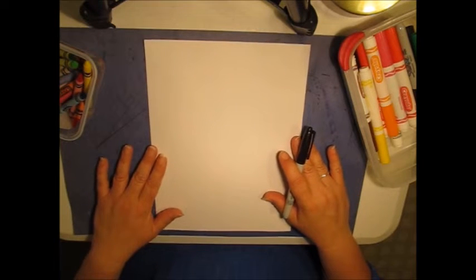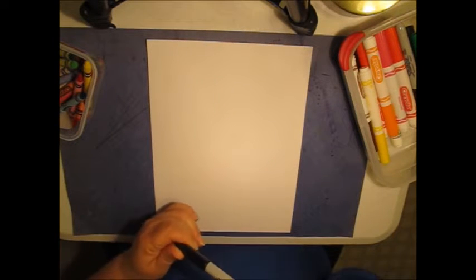I heard you've been talking about shapes in class, so we're going to use our shapes to make a robot. We're going to use circles, triangles, squares, and rectangles to make our robot.